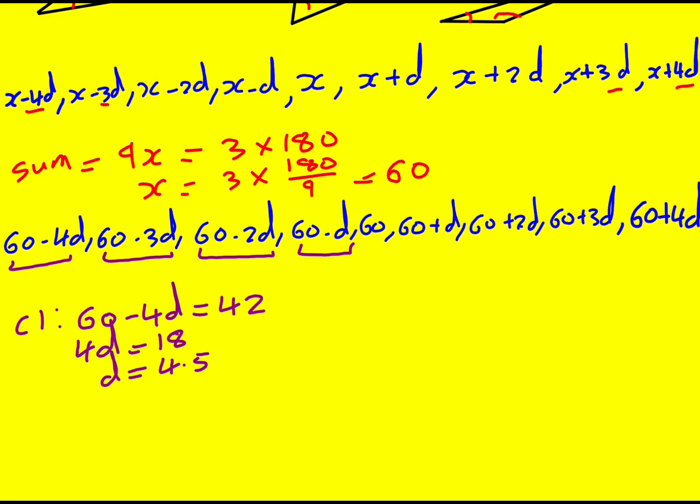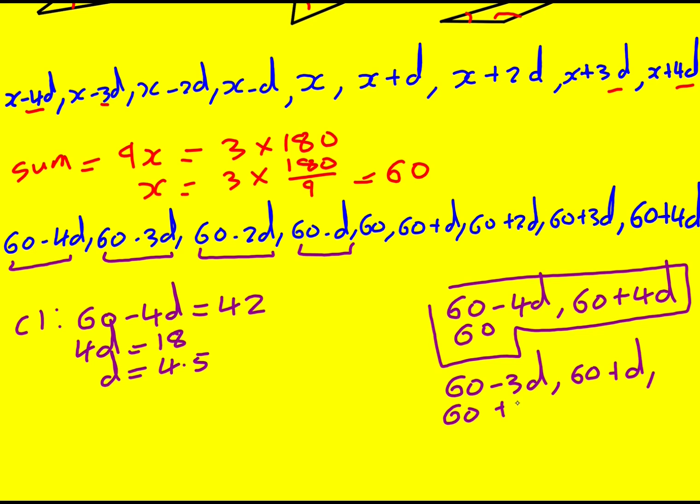We do however need to just check that the triangles are possible to create. We can always go with 60 minus 4d, 60 plus 4d and 60 to create one triangle, provided the thing we're going to have to check in a minute is that we don't get any negative angles. But that will give 180. And then 60 minus 3d can go with 60 plus d and 60 plus 2d. That will leave us with 60 minus 2d, 60 minus d and 60 plus 3d.